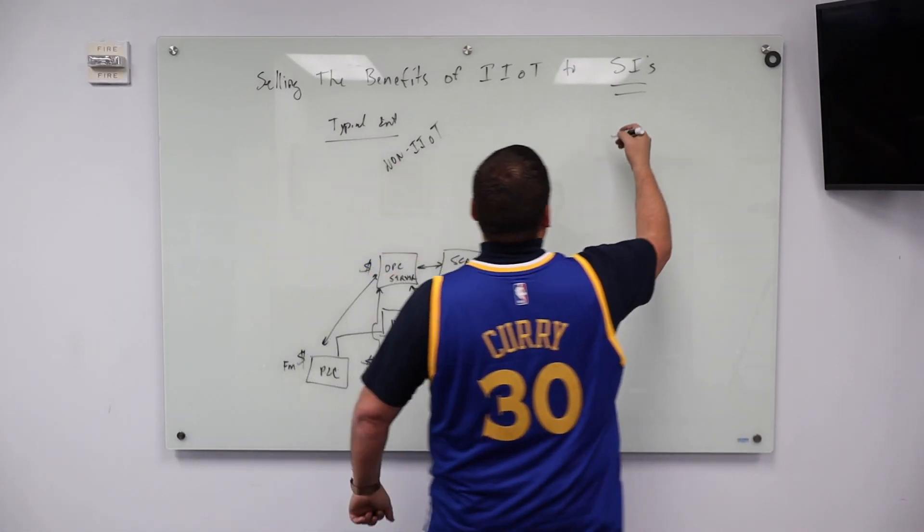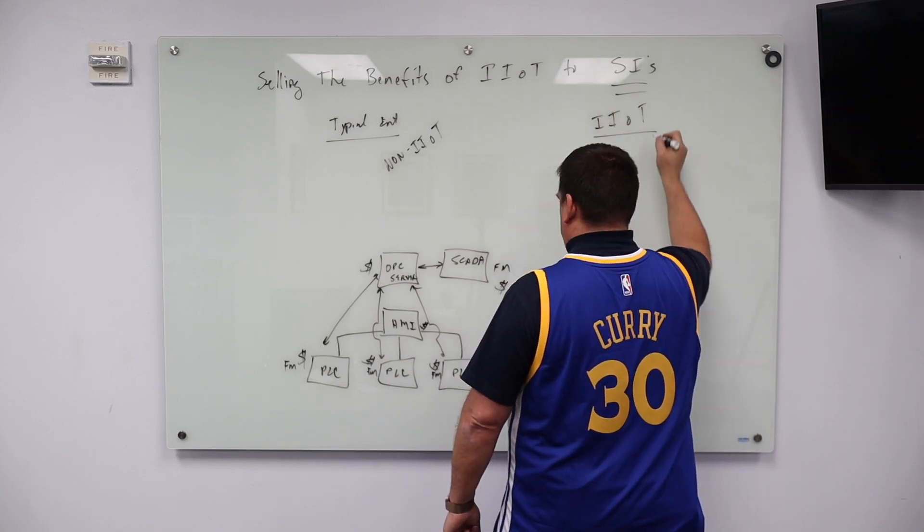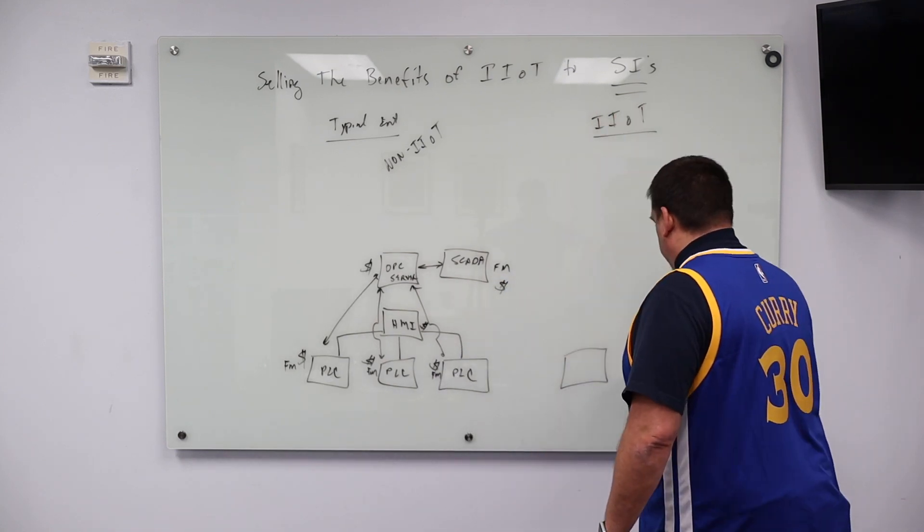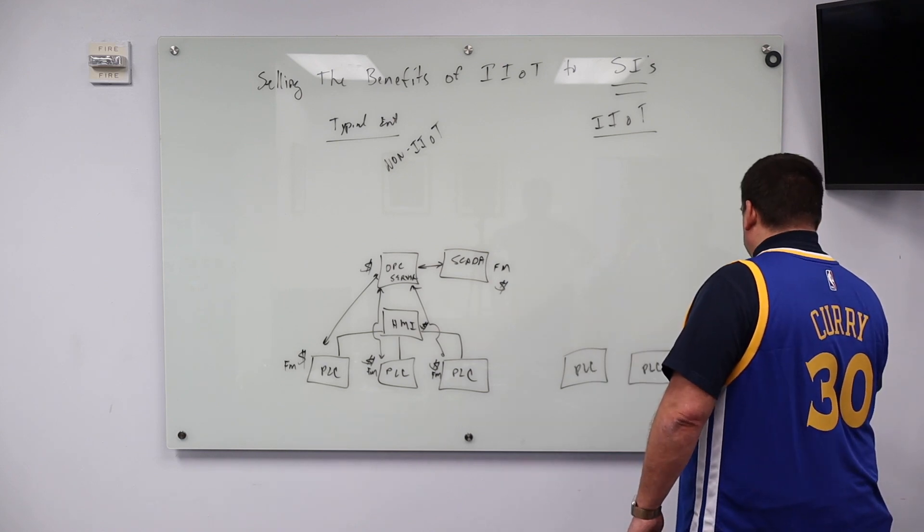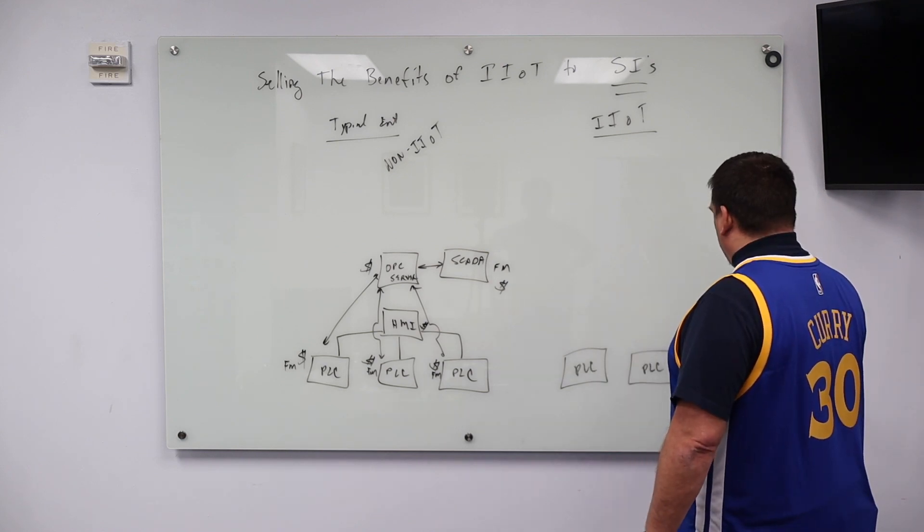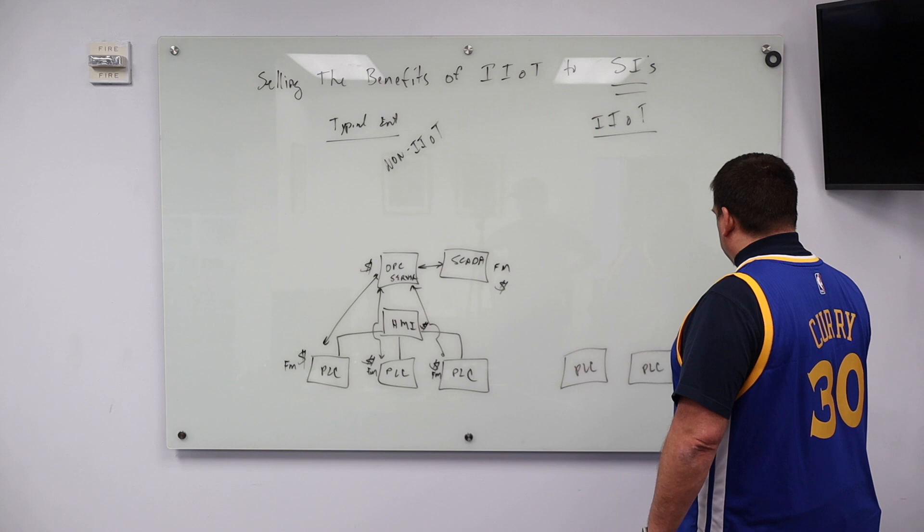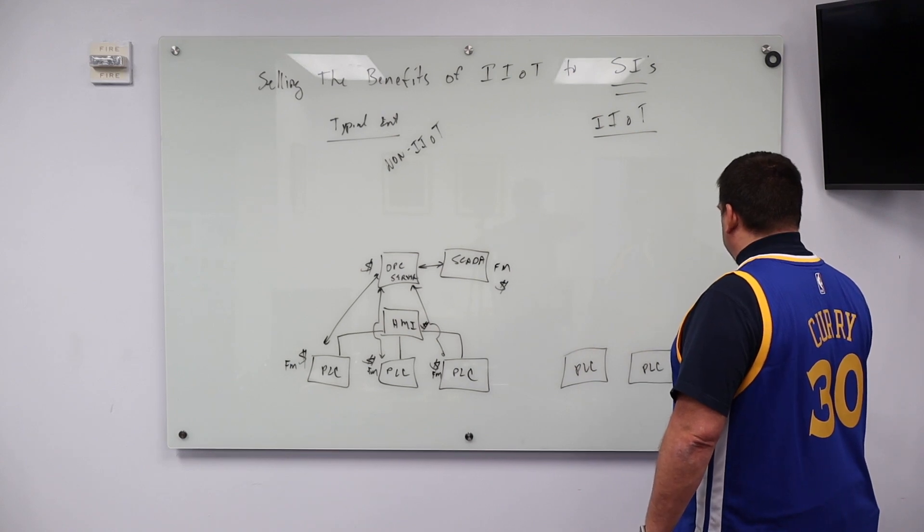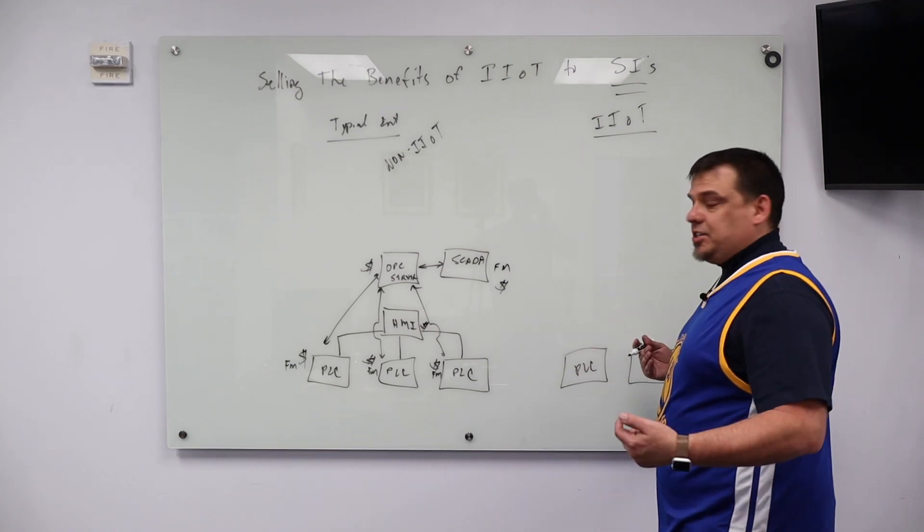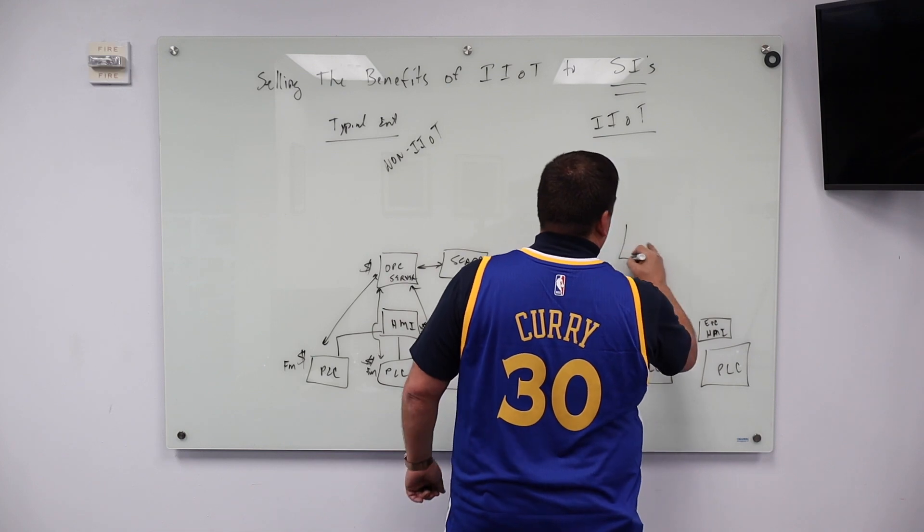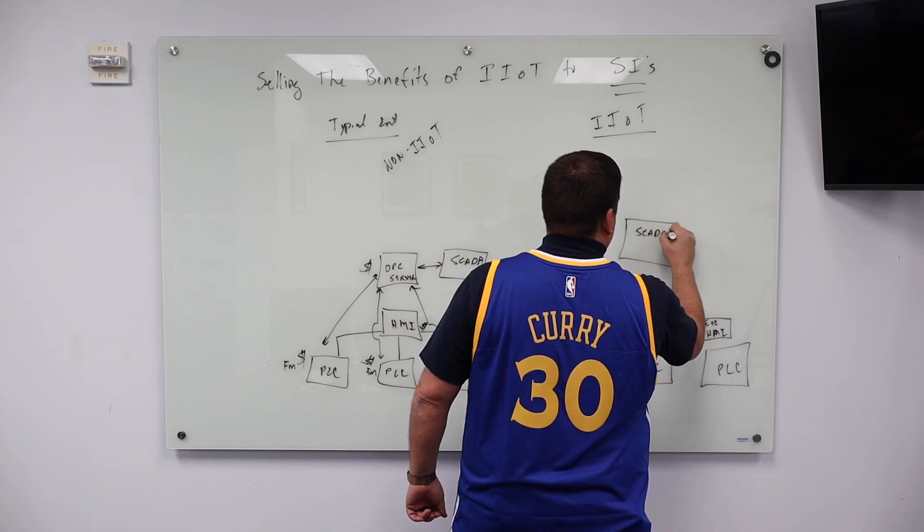Now let's do the IIoT implementation. So I'm going to have the exact same PLCs, except I'm going to do something a little different here. And what I'm going to do is I'm just going to put one edge PC out here, an EPC, which is going to act as our HMI. In this case, we're going to say that's ignition edge. And then I'm going to have my SCADA system up here.